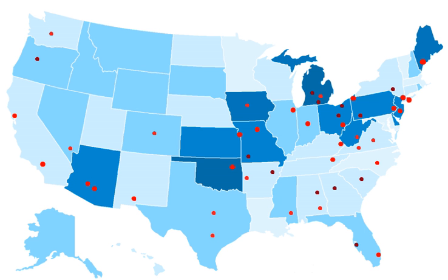Osteopathic medical school curricula are virtually identical to those at schools granting the M.D. degree. Once admitted to an osteopathic medical school, students study for four years. The schooling is divided into pre-clinical and clinical years. The pre-clinical years, the first and second years, focus on the biomedical and clinical sciences. The clinical years, the third and fourth years, consist of core clinical training and sub-internships in the clinical specialties. Accreditation standards require training in internal medicine, obstetrics, gynecology, pediatrics, family medicine, surgery, psychiatry, emergency medicine, radiology, preventive medicine, and public health.